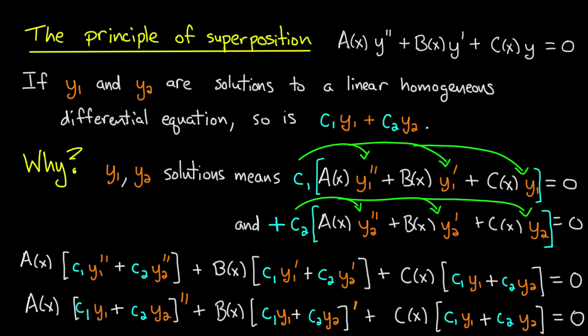Now I should point out that there's nothing special here about a second order linear homogeneous differential equation. This exact argument would go through for any order, as long as the equation is linear and homogeneous. There's also nothing special about taking a linear combination of only two solutions. I could take a linear combination of any number of solutions, and this exact argument would still go through.